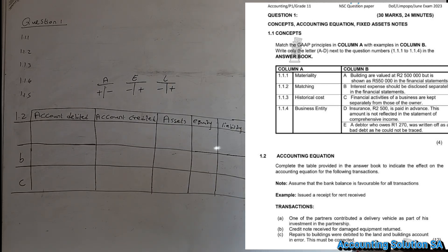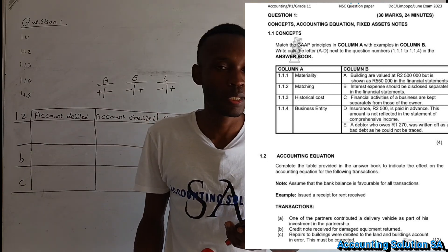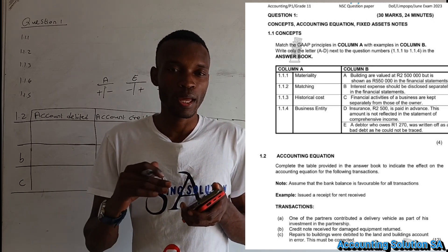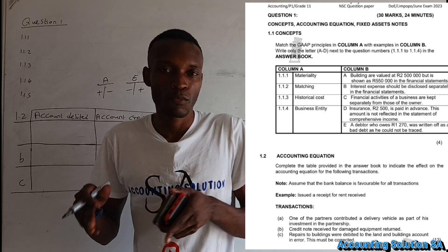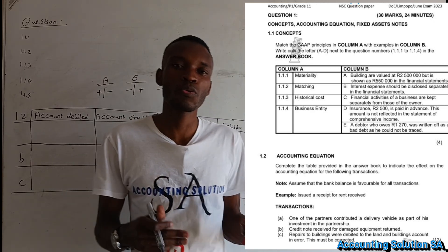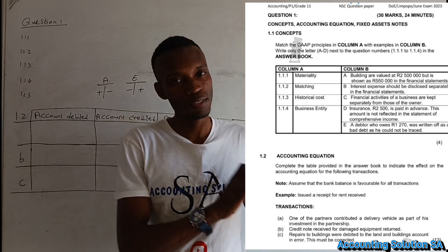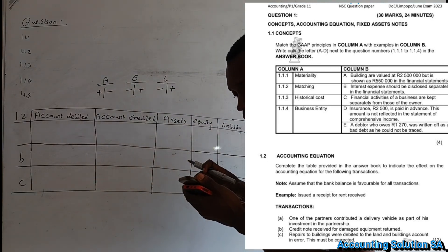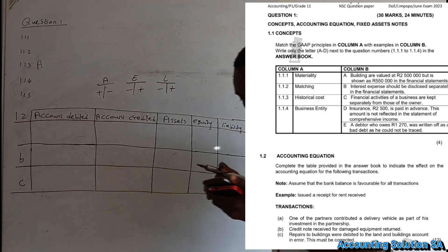We apply the principle of historical cost. Historical cost says that we have to keep a record of all assets as they were originally purchased. For example, if we bought a vehicle for 50,000, we must indicate that the cost price of that vehicle is 50,000 — we call it historical cost. So number A is going to match with number 3.